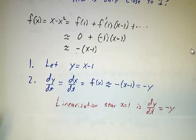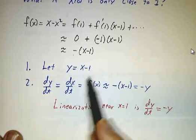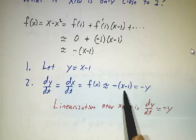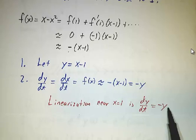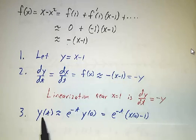So our linearized equation, if we accept this approximation that f(x) is roughly -(x - 1), says the derivative of y is -y. We know what the solution to that is. y(t) = e^(-t) times y(0).